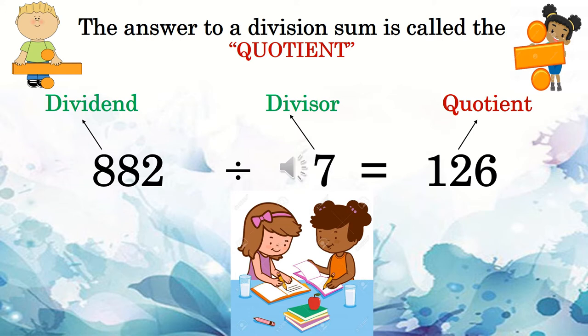So let's take a look at a division sum and we can see what each number is called. We have the sum 882 divided by 7 equals 126. 882 is called the dividend, the number we want to divide. 7 is called the divisor, the number we are dividing by. And our answer, which is 126, is called the quotient, the answer to a division sum.